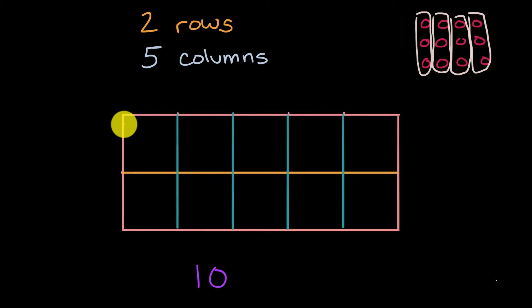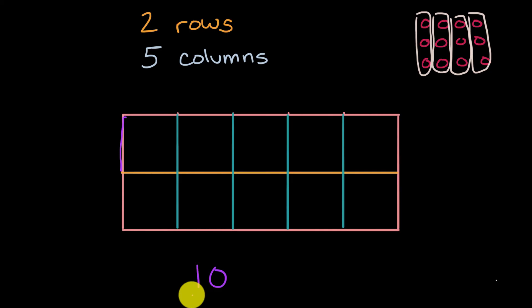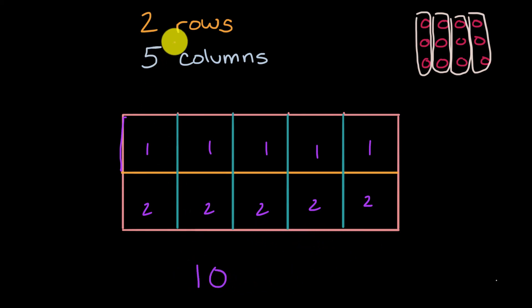That makes sense because each row has five squares: one, two, three, four, five in the first row and one, two, three, four, five in the second row — and five plus five is equal to ten. Another way to think about it is each column has two squares: one, two in each of the five columns — so two plus two is four, plus two is six, plus two is eight, plus two is ten. So splitting the rectangle into two rows and five columns gives me ten sections.